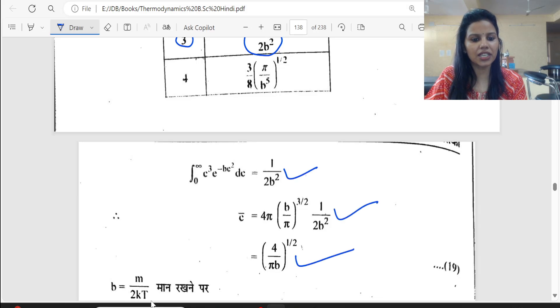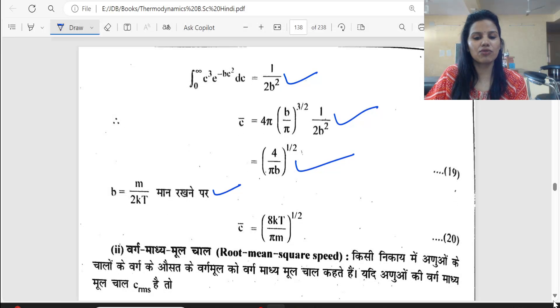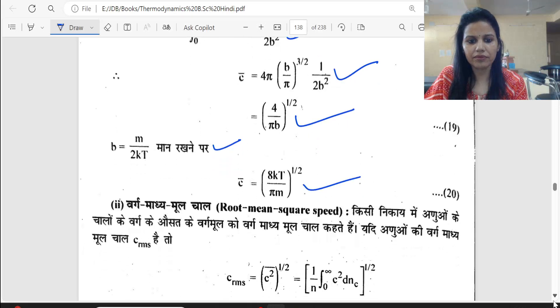Put the value in C bar, solve it, and put the value of b which we derived in previous lecture as m upon 2kT. Then average speed will be square root of 8kT upon pi·m.